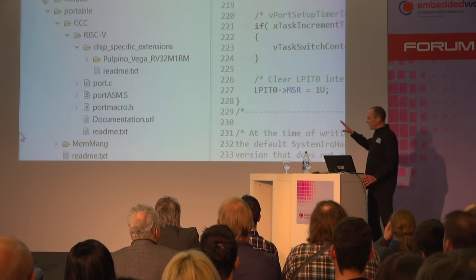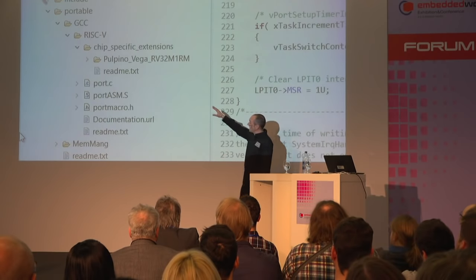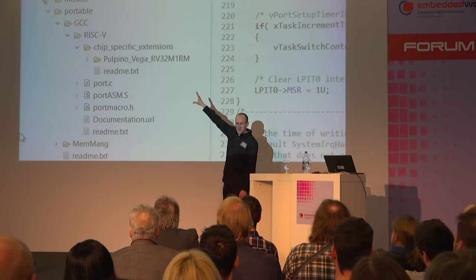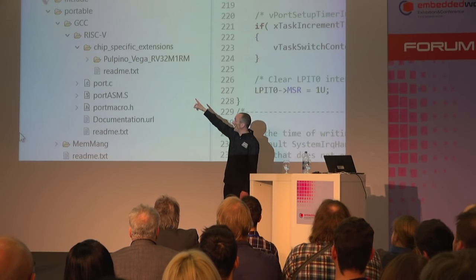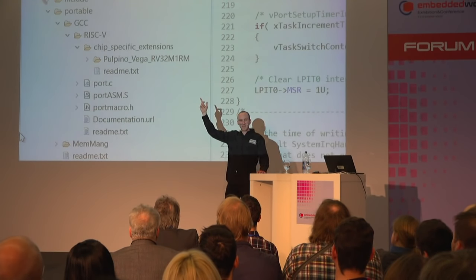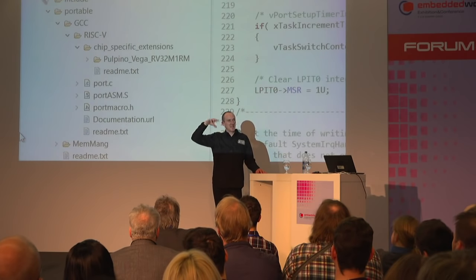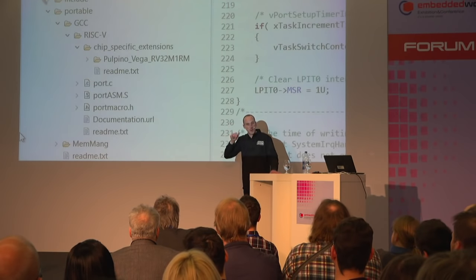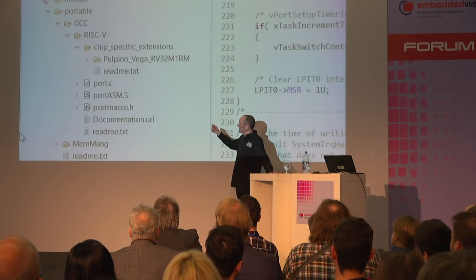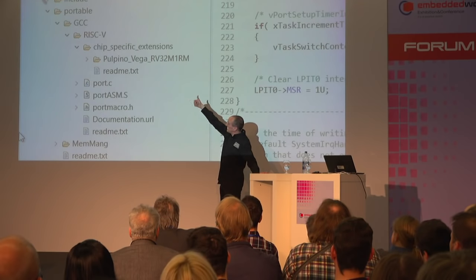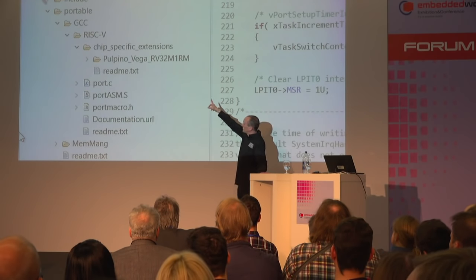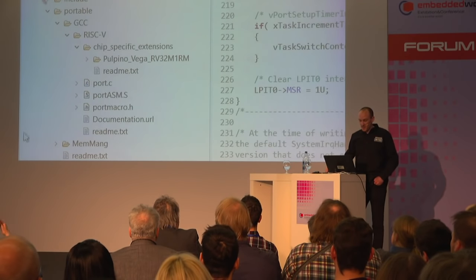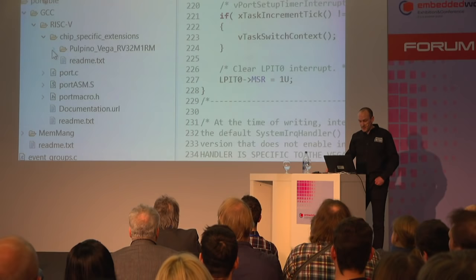If you're familiar with the layout of FreeRTOS, you'll know that most of the source files are common to all architecture ports. And then there's a portable layer — which is actually the only bit that is not portable, because it's directly for a specific compiler and architecture. So you go to GCC as your compiler first, and then the architecture, which is RISC-V. And then we've added this new thing: the RISC-V chip-specific extension.